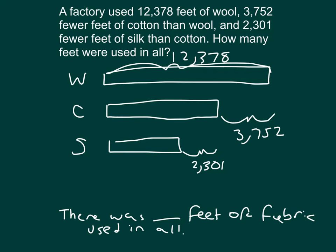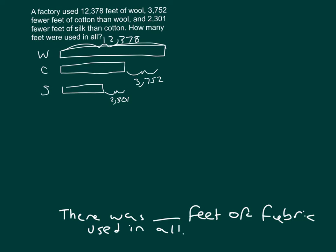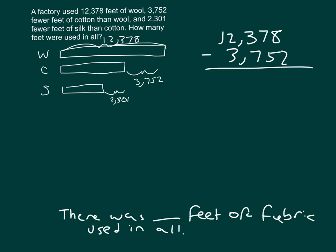We will go step by step to figure each of those out. Starting with wool and cotton: we know the wool is 12,378 feet, cotton is shorter, and the difference between the two is 3,752. So we'll take 12,378 and subtract 3,752 to get the cotton amount.